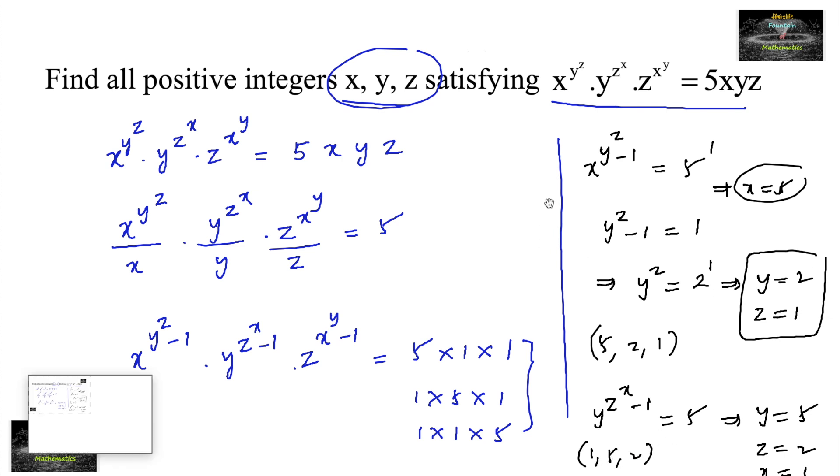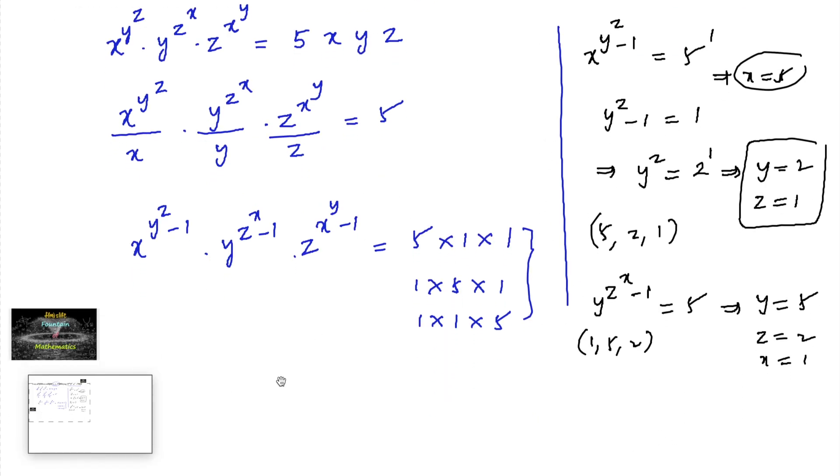Similarly the other possibility you can get by taking z to the power of x to the power of y minus 1 is equal to 5. Which implies here z is equal to 5 and x is equal to 2, y is equal to 1. That is 2, 1, 5. This is another pair.